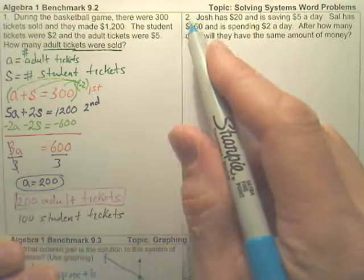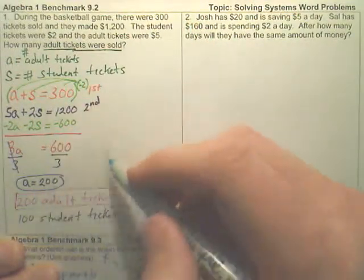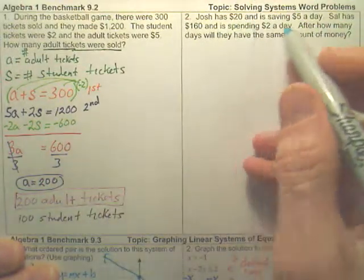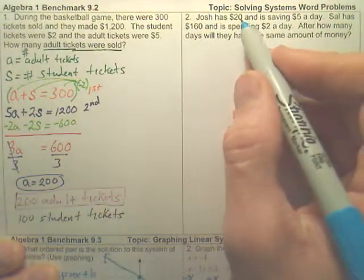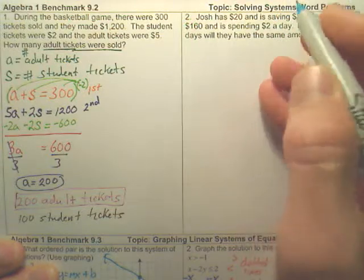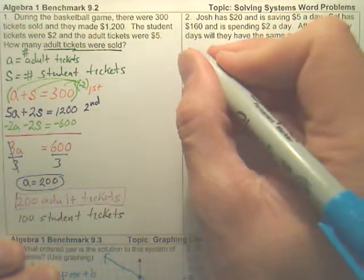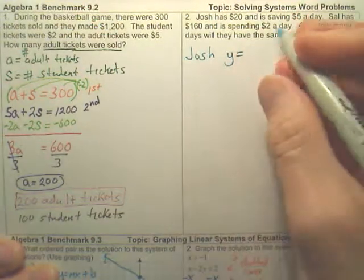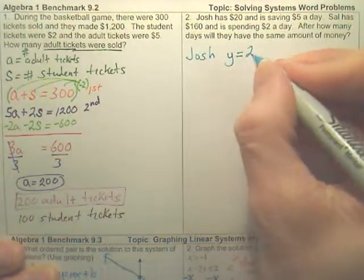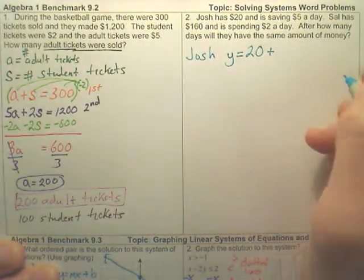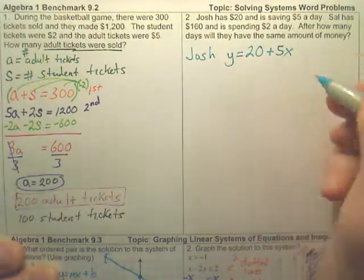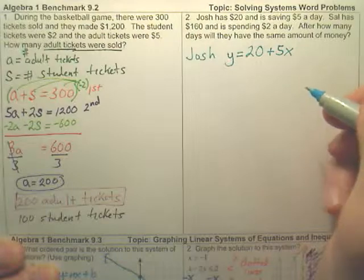For number two, different idea. This one, we are using elimination combinations. This is a whole different problem. Josh has $20 and is saving $5 a day. Here's how we're going to write. This is Josh. We're going to write his equation as Y equals, he has 20, plus how much a day? $5 per day. That's Josh.